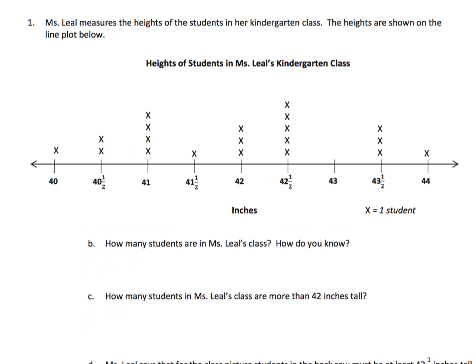And then how many students are in Mrs. Leal's class altogether? So that means we have to count all the X's. So 1, 2, 3, 4, 5, 6, 7, 8, 9, 10, 11, 12, 13, 14, 15, 16, 17, 18, 19, 20. Boom, there are 20 students in Mrs. Leal's class and that's how we know, is because we counted all the X's.